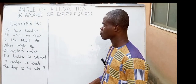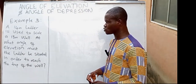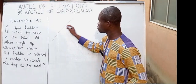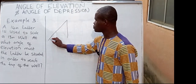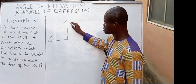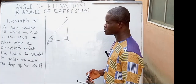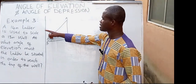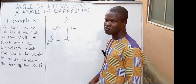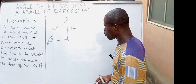Let's look at example number 3. A 14-meter ladder is used to scale a 30-meter wall. At what angle of elevation must the ladder be situated in order to reach the top of the wall? The ladder leans on the wall, so the ladder becomes our hypotenuse. This is the wall — let's represent it with a vertical line. This is the angle of elevation the ladder makes with the floor, as with the normal. Let's call here A, here B, and here C. The angle of elevation is theta, and that is what we are asked to find.